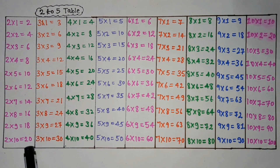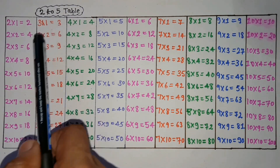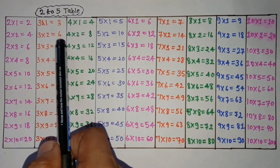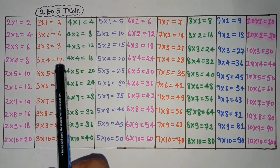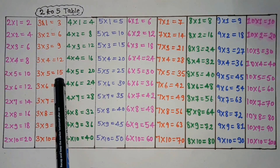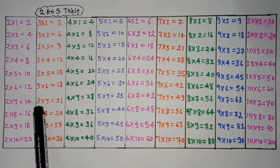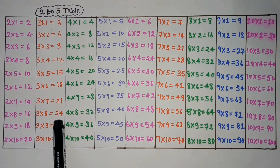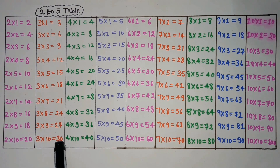2 tens are 20. 3 ones are 3. 3 twos are 6. 3 threes are 9. 3 fours are 12. 3 fives are 15. 3 sixes are 18. 3 sevens are 21. 3 eights are 24. 3 nines are 27. 3 tens are 30.